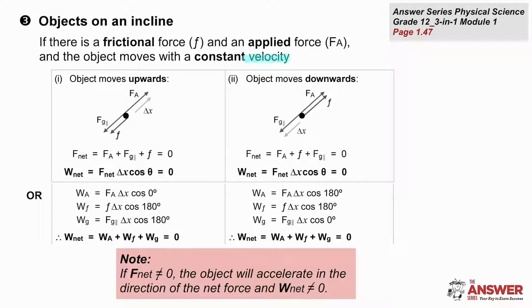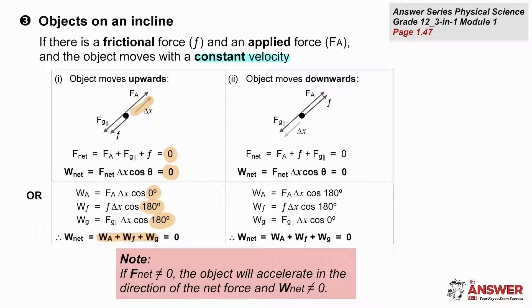If an object is moving at a constant velocity on an inclined plane, we can look at what it means to be moving up the slope. The net force is zero, which means that the net work done on that object is zero during the motion. The applied force works in the same direction, doing positive work. Friction opposes the motion and the gravitational force is also in the opposite direction, doing negative work. The sum of works gives us a net work done on that object of zero joules.